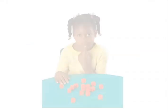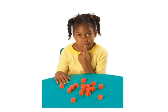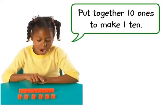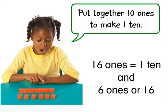Tens and ones. You can show a number as tens and ones. You can regroup ten ones as one ten. Put together ten ones to make one ten. The girl has one ten and six ones remaining. Sixteen ones equals one ten and six ones, or sixteen.